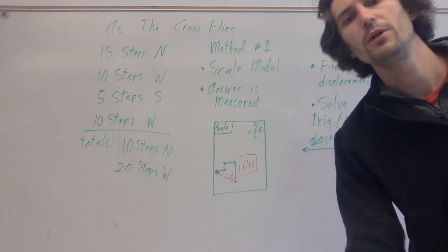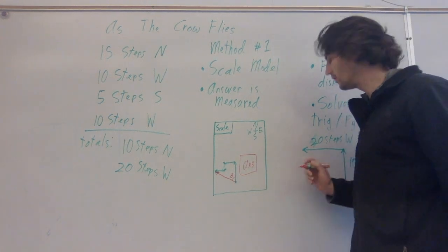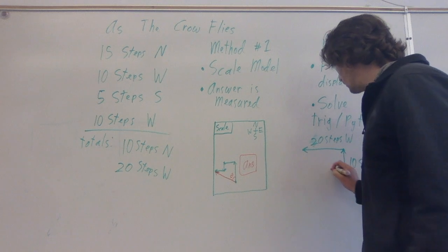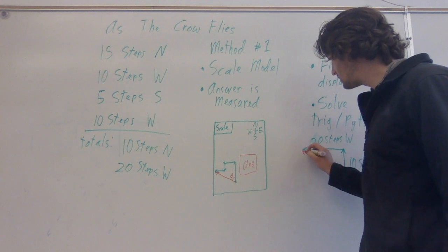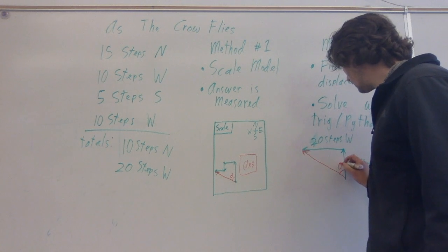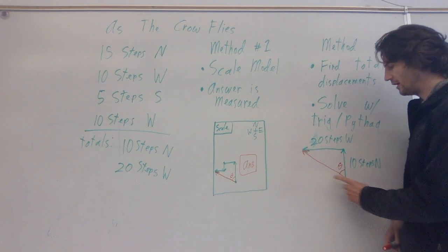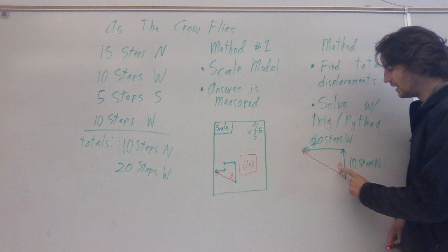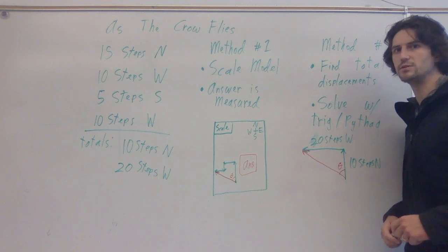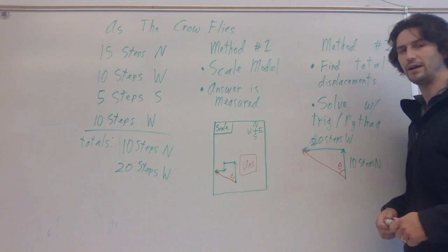Then we're going to have something that represents 20 steps west. We're going to do pretty much the same thing that we did earlier. We will draw our final displacement vector. Then we can use trigonometry as well as the Pythagorean theorem to find the length of this vector as well as the angle. And please, please, please define that angle in a classroom-approved manner.